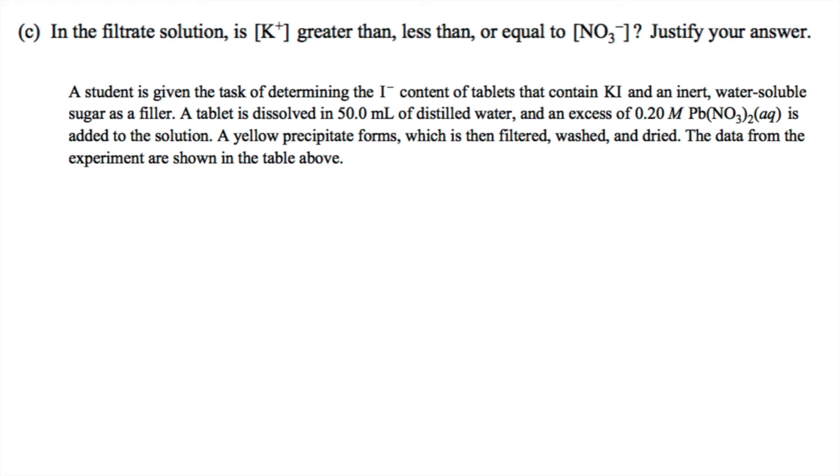Then part C says, in the filtrate solution is the concentration of potassium greater than, less than, or equal to the concentration of nitrate ions. Justify your answer. So this description says that lead-to-nitrate was added to the solution in excess. This means that while the iodide and the potassium are used up, there's still going to be extra lead and nitrate ions left. So the concentration of nitrate is going to be greater than the concentration of potassium.